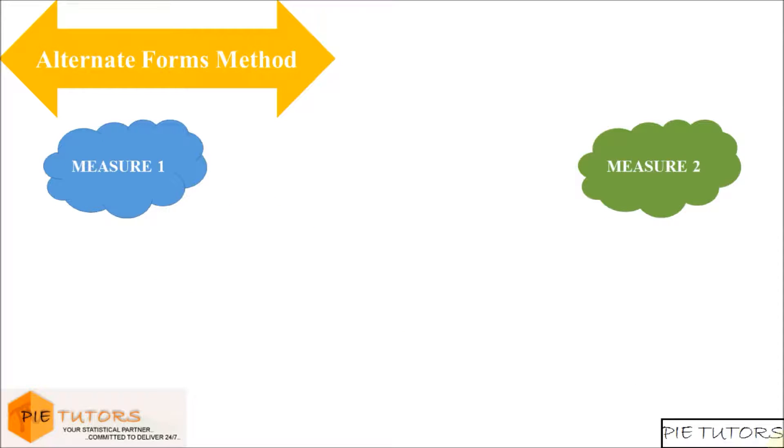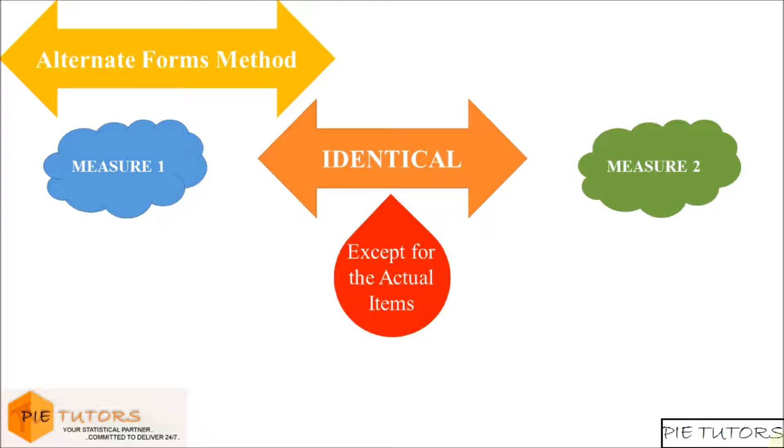The two measures are identical in every way except for the actual items included. The correlation between the score of the two measures is the reliability coefficient.